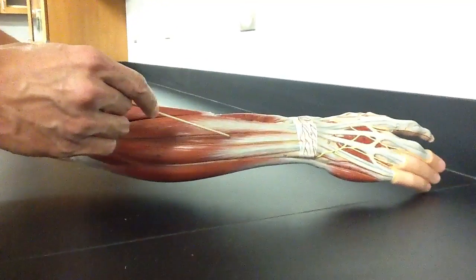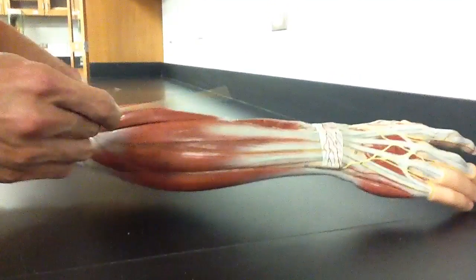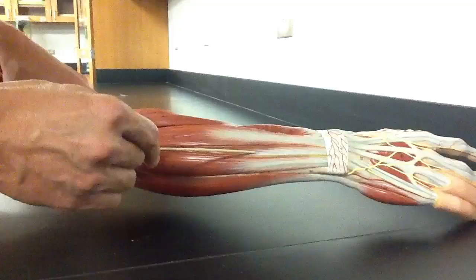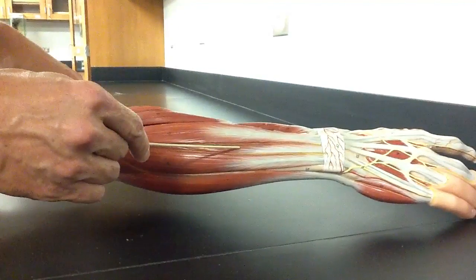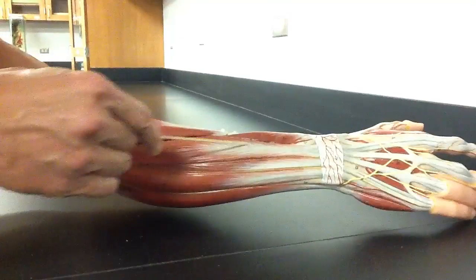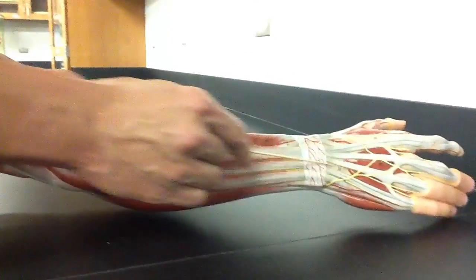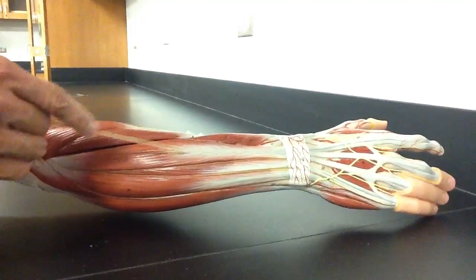This is called the extensor digiti minimi. D-I-G-I-T-I-M-I-N-I-M-I. So use up all your scrabble i's there. So that's the extensor digiti minimi. The next muscle over, notice it goes over to multiple digits. As you can see, this is the extensor digitorum.